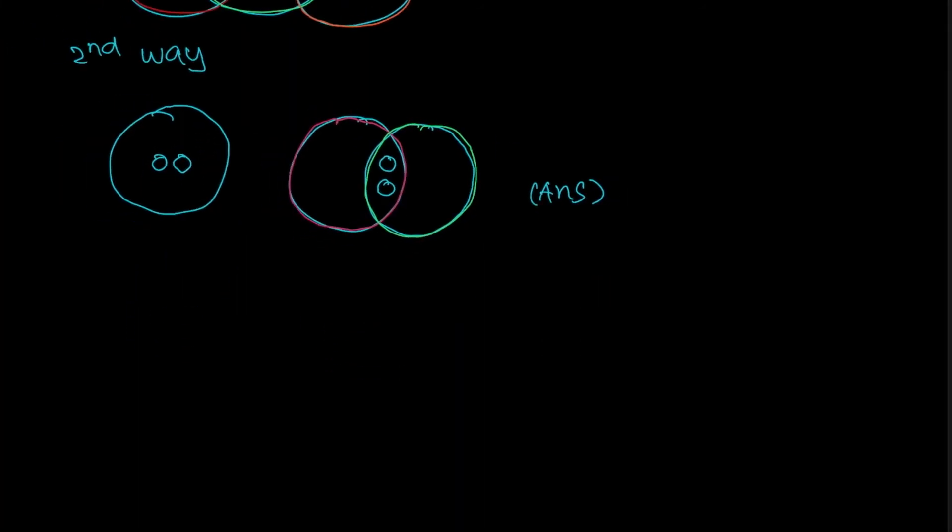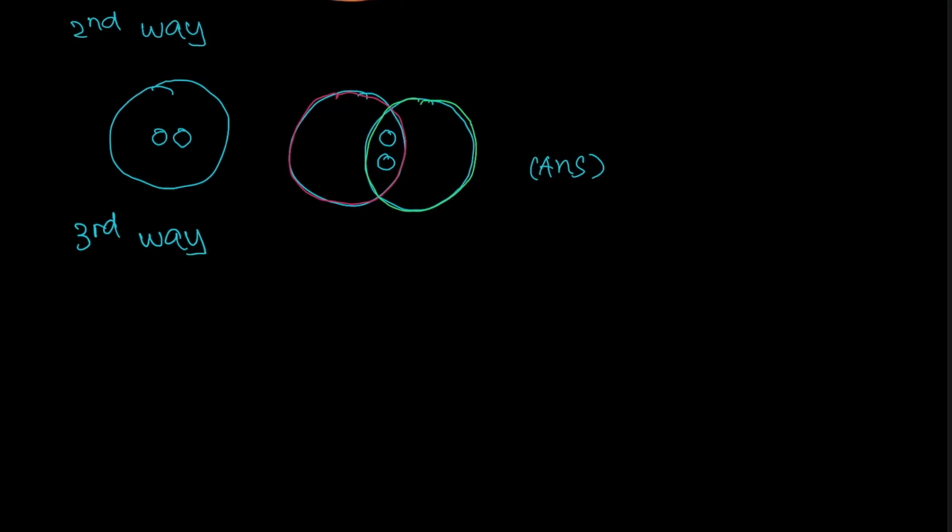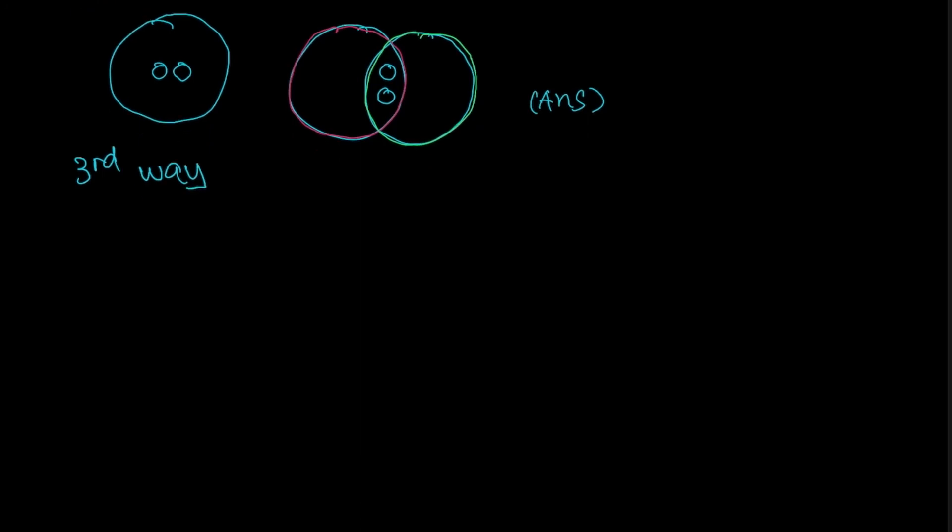So there's actually a final way. The third and final way is actually what happens when all three circles actually overlap each other. So when all three circles overlap each other, you will notice that you will have this region over here. I'm just going to put one over here. This circle will actually exist for all three circles.